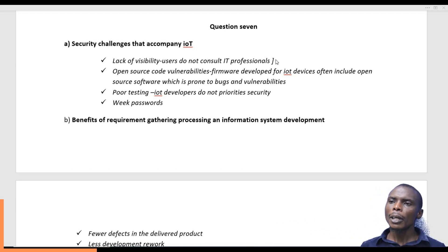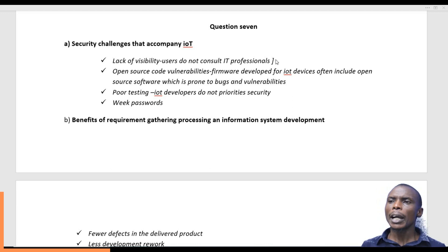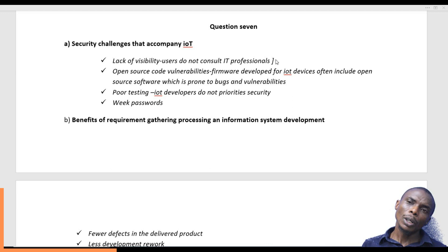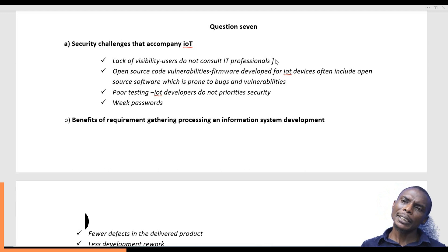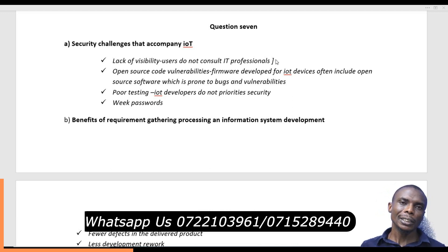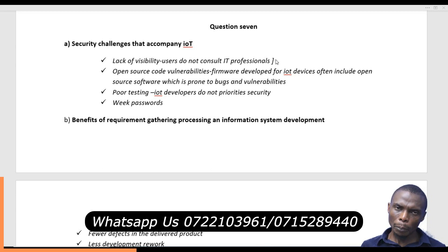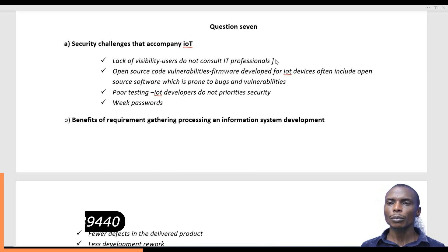We also have what we call open source code vulnerabilities. Open source means free. The software or firmware developed for IoT devices comes with open source software, which makes it easier for other people to change these codes and to bug them. This makes IoT devices very vulnerable — any person can come and interfere with the normal programming or operations of the IoT.